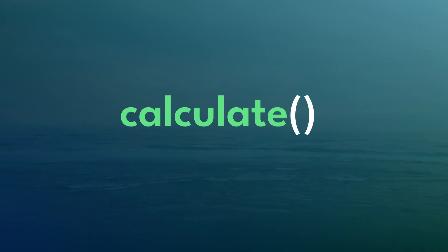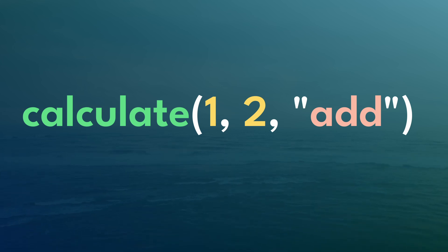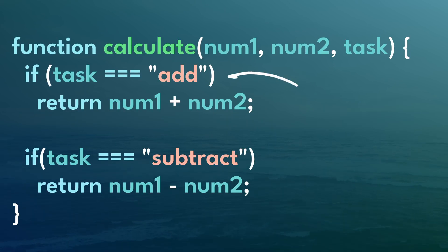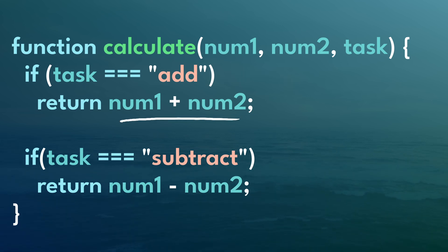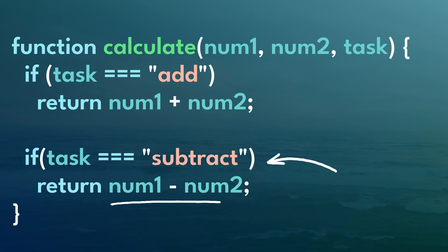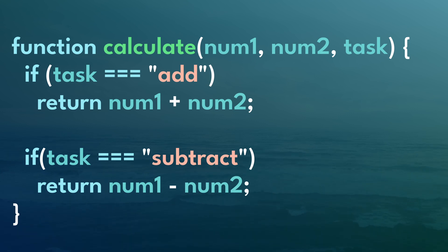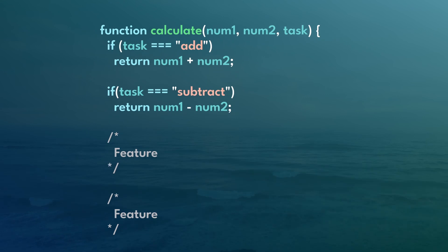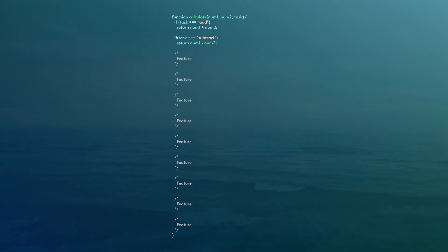As an example, say we have a calculate function whose purpose is to add and subtract two numbers. If we implement this in a non-extensible way, we'd have two parameters for the numbers and maybe a third parameter that is just a string. Inside the function, we have an if statement: if it's 'add', then we'll add them together; if it's 'subtract', we'll subtract the numbers. The problem is that if someone wants to add more functionality, they're going to have to go inside the calculate function and add it themselves. This can lead to god functions — as you add more features, the function just keeps getting longer.